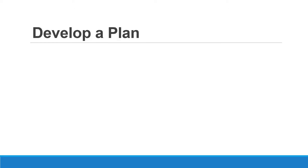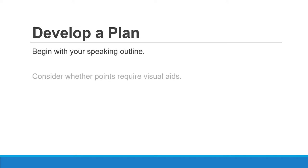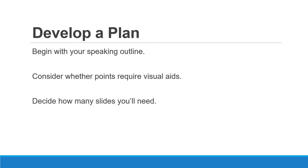First, you'll need to develop a plan. That will begin with your speaking outline. Next, you will consider which points you want that will have visual aids. It's important to know how many slides you'll need, and you'll want to determine how to arrange those slides effectively.